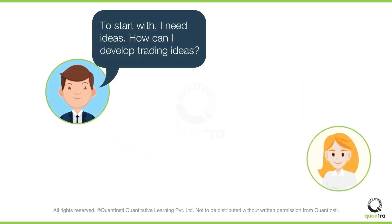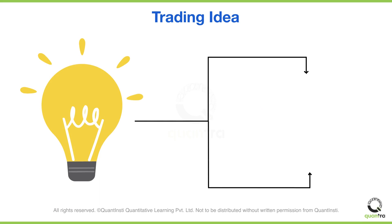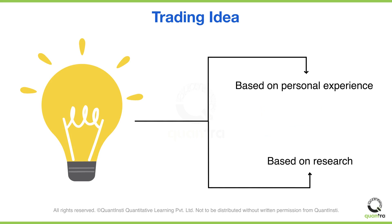He asks his friend Mary how to come up with a trading idea. Mary says that there are two ways to go about it. He could come up with an idea of his own based on his experience, or alternatively, he could learn about some existing strategies by carrying out research.